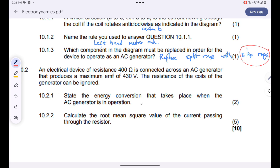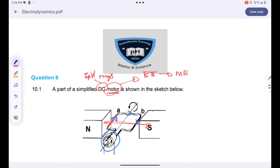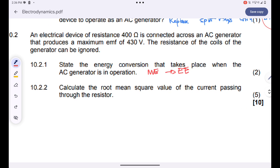State the energy conversion that takes place when an AC generator is in operation. Generators convert mechanical energy into electrical energy. For motors, it's vice versa. Remember, I told you initially that motors convert electrical energy into mechanical energy. But for generators, it's an opposite. Generators convert mechanical energy into electrical energy.